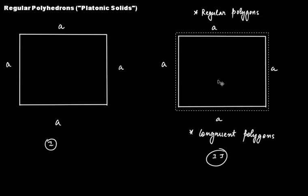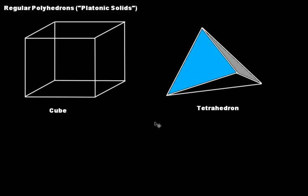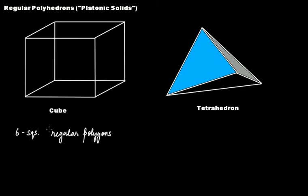If you are wondering why we are discussing regular polygons and congruent polygons here, let's understand this. You have a cube here and you have a tetrahedron here. In the case of a cube, you have 6 squares — the front face, the back face, the right side face, the left side face, the top face, and the bottom face. So you have 6 faces made up of squares. Squares are regular polygons, so this is the first criterion for a regular polyhedron.